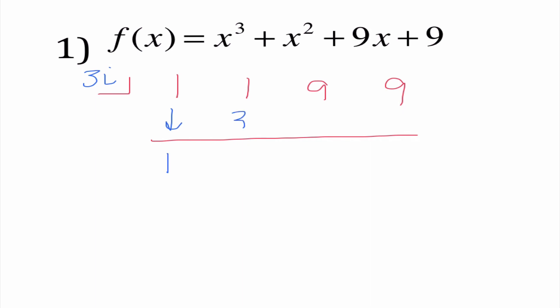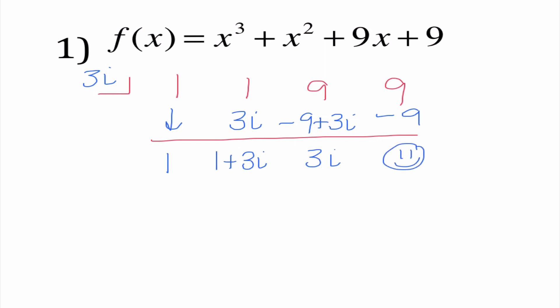When I bring down 1, 1 times 3i is 3i, so now I have 1 plus 3i. 3i times 1 plus 3i is distributing: 3i times 1 is 3i, and 3i times 3i is 9i squared which is negative 9. When I add these together, I'm left with 3i. Then 3i times 3i is 9i squared which is negative 9, and we get zero. Now, the problem is this is x squared but see all these i's in here. Unless we remember: i's always come in pairs. So if we know 3i is a zero, negative 3i also has to be a zero.